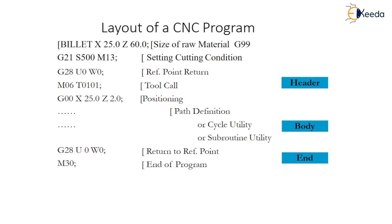Then we move to the setting condition and reference point return. G28 is used for reference point return — that is the part program origin. M06 for tool change, tool call. T0101: 201 is used for tool number 1 and 01 is for output. D00 is the rapid position.